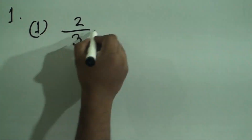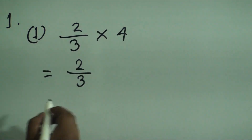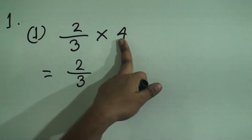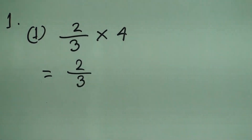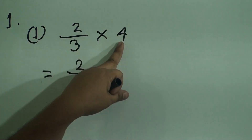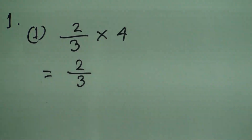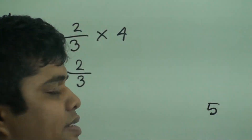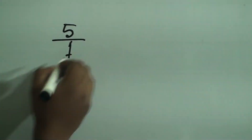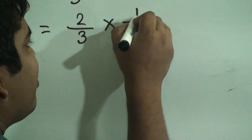So, question 1 number 1: 2/3 multiply by 4. At first we write 2/3. Now, do you know what 4 means? 4 is a number and it has a denominator which is 1. Not only 4 — every number, just like 5, is a fraction and it has a denominator which is 1. We need not write that denominator. So we write 4 as 4/1.